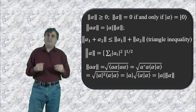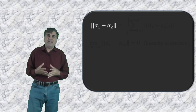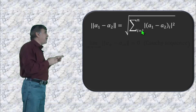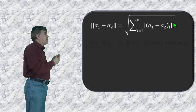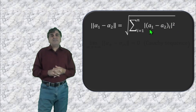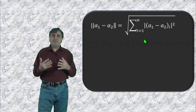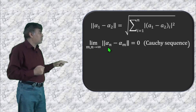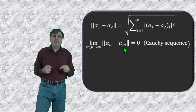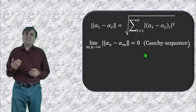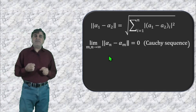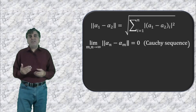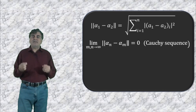The generalization of the norm can be used to find the distance between two vectors in a Hilbert space. If alpha_1 and alpha_2 are two vectors, the distance is given by the norm of their difference, which equals the square root of the sum of the modulus squares of the differences of corresponding components. If the distance between any two vectors alpha_n and alpha_m satisfies the property that as m, n tend to infinity the norm of alpha_n minus alpha_m goes to zero, this property is called the Cauchy sequence. If the Cauchy sequence is satisfied then the Hilbert space is said to be complete over the norm, and an inner product vector space over the complex numbers that is complete over the norm is called Hilbert space.